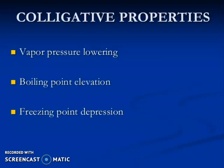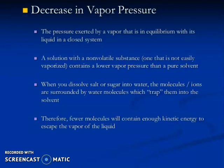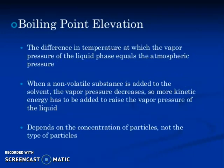Vapor pressure lowering, boiling point elevation, and freezing point depression are properties resulting from the decrease in vapor pressure. Vapor pressure is the pressure exerted by vapor in equilibrium with its liquid in a closed system. A solution with a non-volatile substance — one that is not easily vaporized — has a lower vapor pressure than a pure solvent. When you dissolve salt or sugar into water, the molecules or ions are surrounded by water molecules which trap them into the solvent. Therefore, fewer molecules will have enough kinetic energy to escape into the vapor phase. I would suggest you watch this video completely to understand colligative properties.